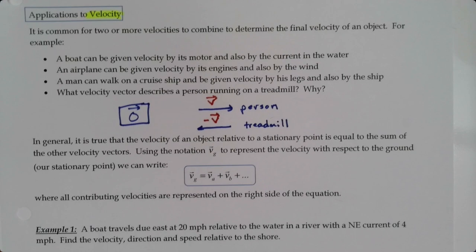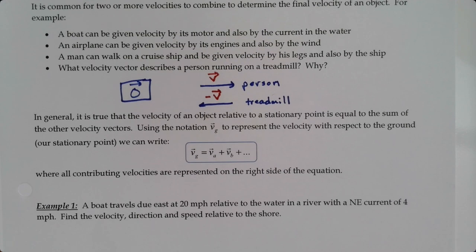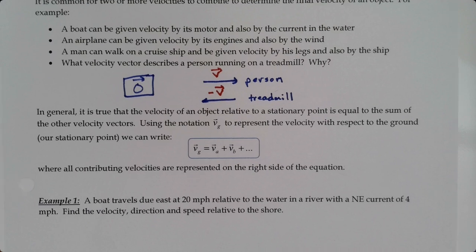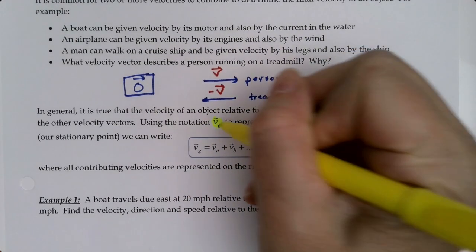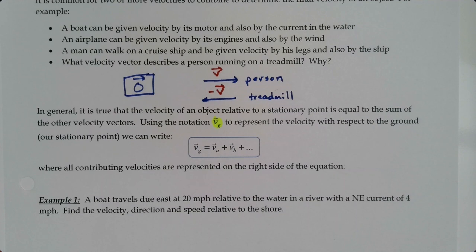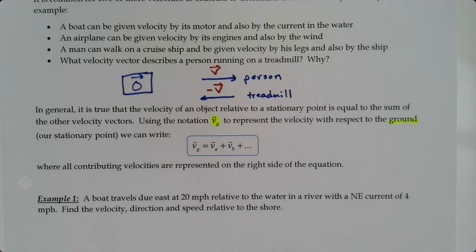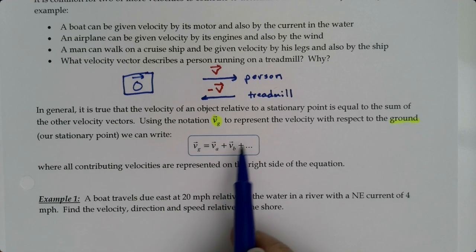In general, it is true that the velocity of an object relative to a stationary point is equal to the sum of the other velocity vectors. We use vg, velocity with respect to the ground, and vg is the sum of all the component velocity vectors that make it up.